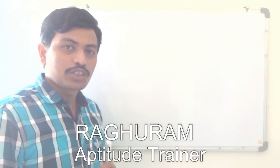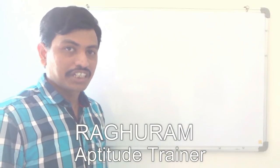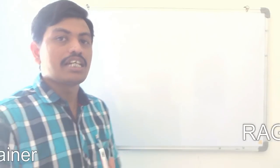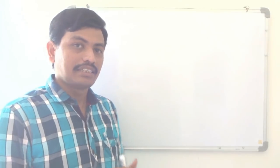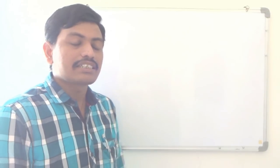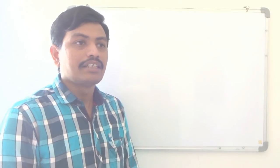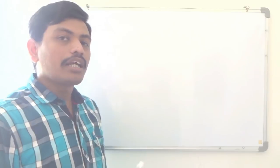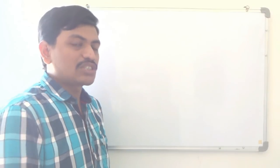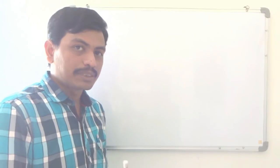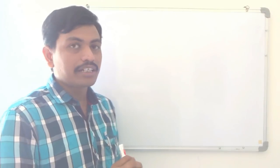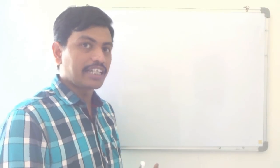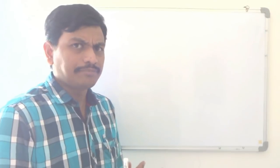Hi everyone, this is Raghuram, active trainer. Now we are going to see speed math — some techniques and speed math. We will learn about the squares of some numbers; we can find up to 125 squares. I'll tell you some tricks.